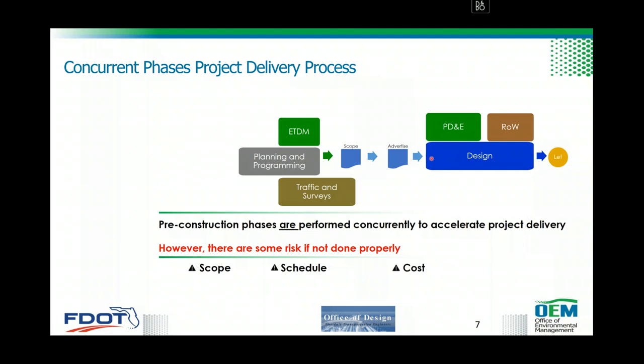Under these contracts, PD&E and design will be performed concurrently to accelerate project delivery. However, following this process, there are risks you should be aware of — risks related to scope, schedule, and cost. If you do not scope it well, you're probably not going to be successful. The schedule — how you'll line up activities to support NEPA approval as well as design plans — and costs are all tied together. If you don't do well on scope and schedule, you'll ultimately have cost issues.